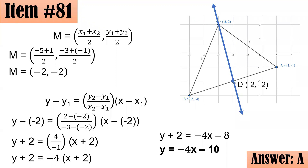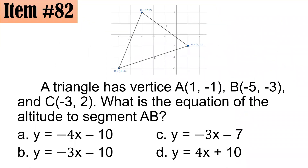Item 82 uses the same triangle vertices. What is now the equation of the altitude to segment AB? Unlike the median where we located the midpoint, when we say altitude, it is the line segment drawn through C that is perpendicular to AB.